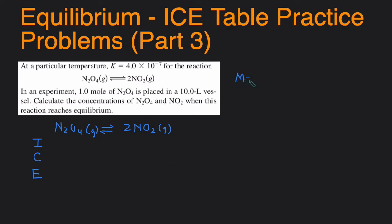Once again, concentration is molarity. Molarity is moles over liters. So it tells us that initially there were N2O4 in a 10-liter vessel, so I can convert that into concentration. Concentration N2O4 initially will be 1.0 moles divided by 10.0 liters, which will give us 0.10 molar.